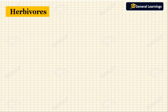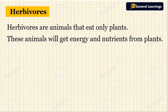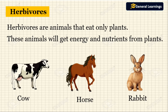First, we are going to see about herbivores. The animals that eat only plants will be called herbivores. These animals get their energy and nutrition from plants. Examples of herbivores are cow, horse, and rabbit — these animals eat only plants.